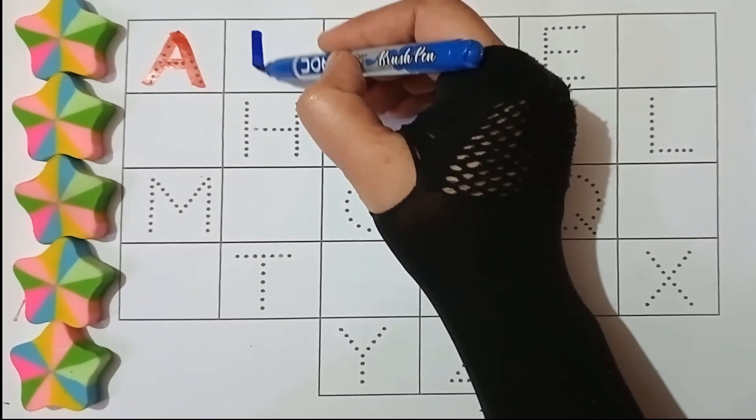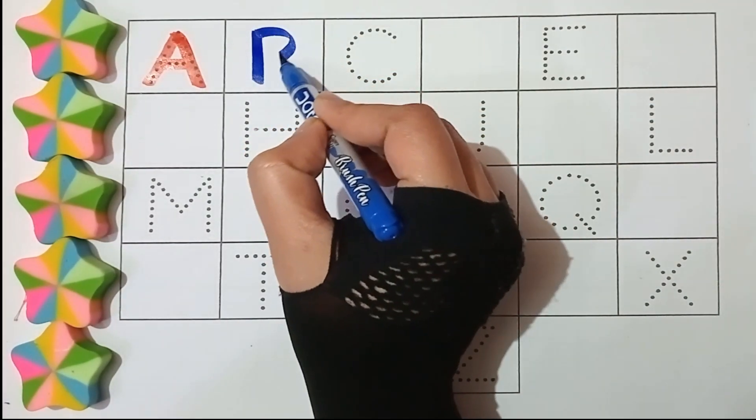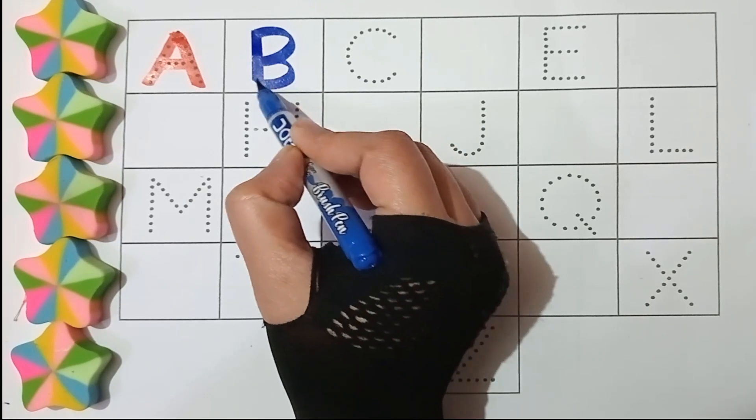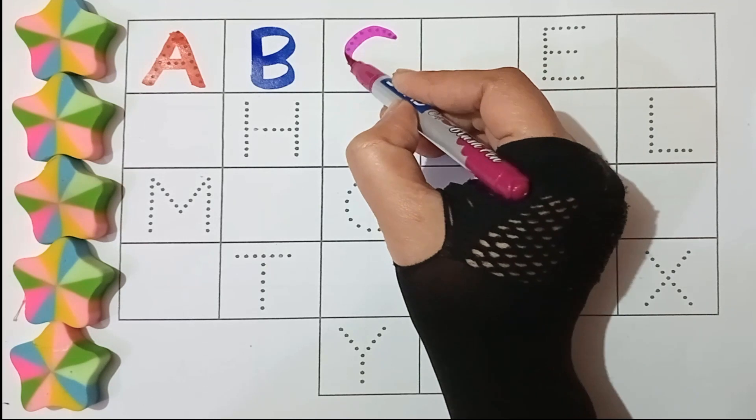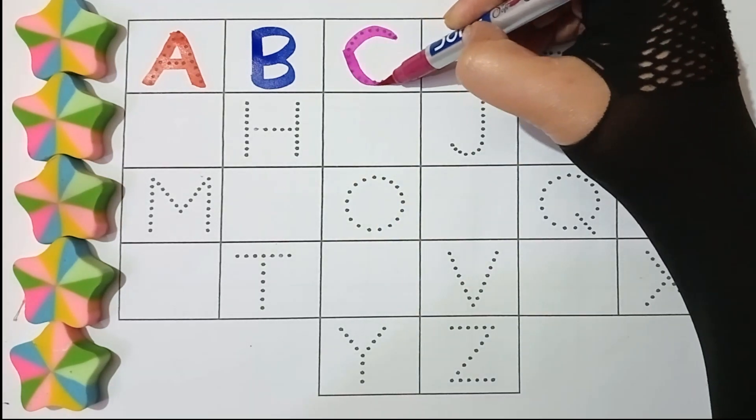Blue color. B, B for bat, B. Pink color. C, C for cat, C.